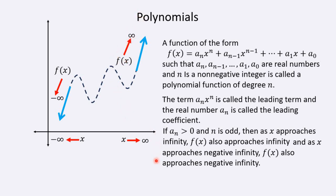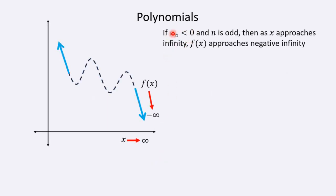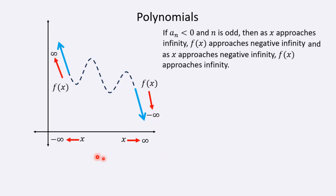In another case, if we have a negative leading coefficient but n is still odd, then as x approaches infinity or gets really large, y is actually going to approach negative infinity. And as x approaches negative infinity or gets really, really small, y is going to approach positive infinity — y is going to get really, really large.